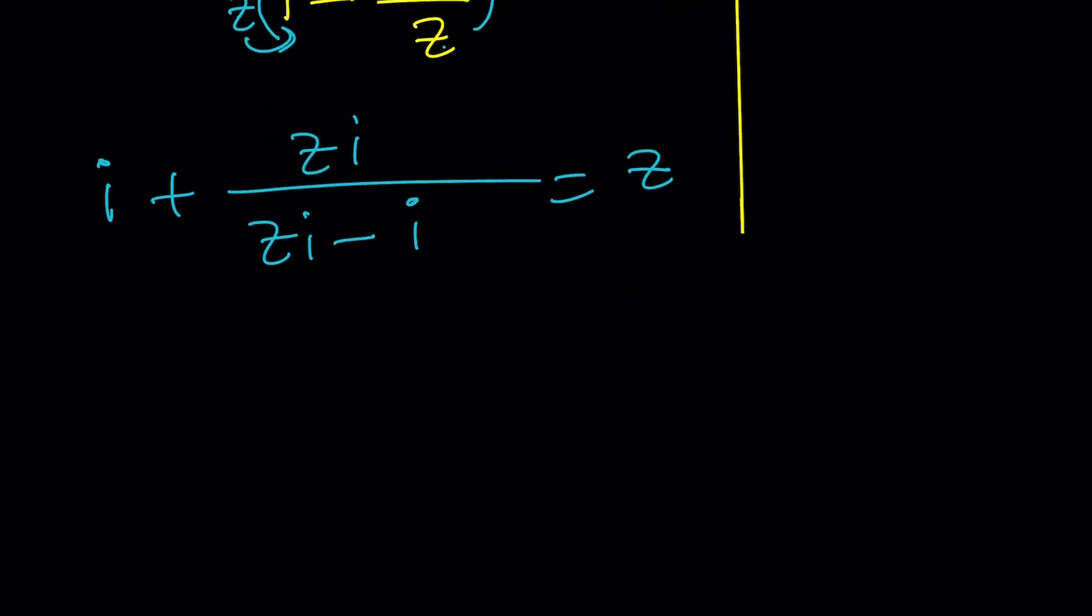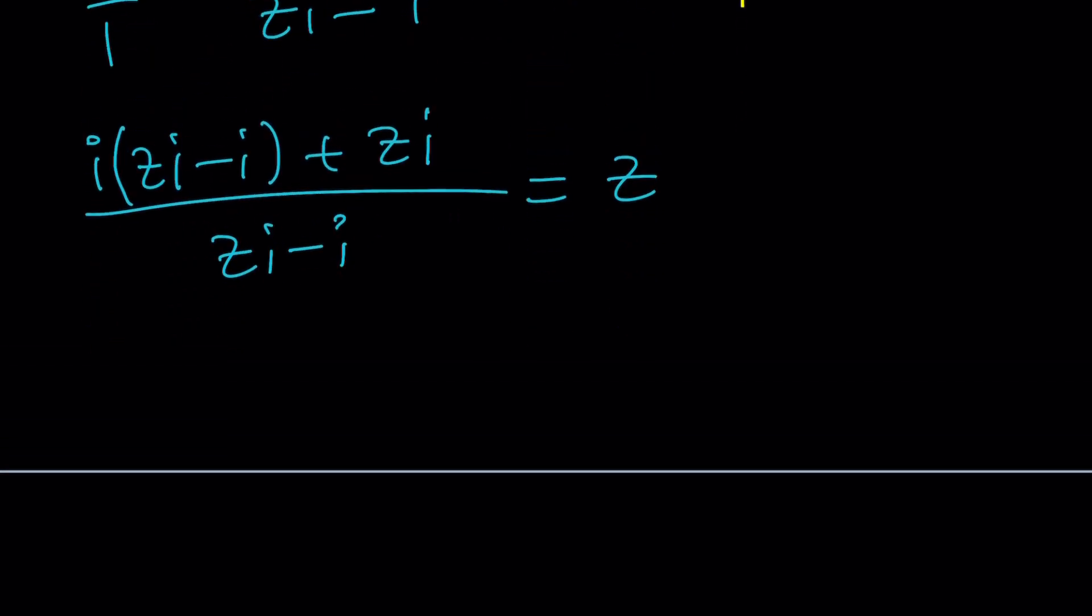Great. We're closer to the solution. Now let's go ahead and make a common denominator. Or you could multiply by ZI minus I. Whatever. Doesn't matter. The common denominator is just going to be ZI minus I. So multiply I by ZI minus I and then add ZI to it. And then at the bottom you're going to have ZI minus I. And it's going to equal Z. So many Z's and I's together. It's kind of like a jumbo mumbo.